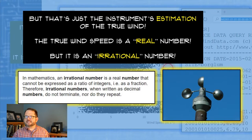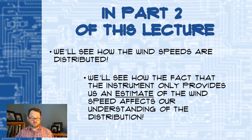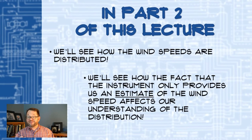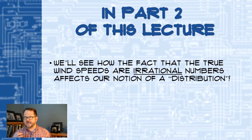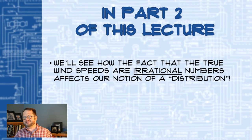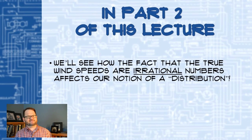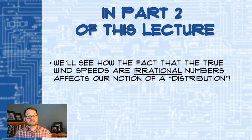This is pretty theoretical stuff, but it will give us insights into what we're doing in part two of this lecture. In part two, we're going to see how wind speeds are distributed — how often we get wind speeds of a particular speed, how often the wind is stronger than a given threshold, how often it falls in a certain range. We'll see that the instrument only providing rational-number estimates of wind speed affects our understanding of that distribution. More deeply, the fact that the true wind speed is an irrational number changes our whole idea of what we mean by a distribution of wind speeds — what are the chances the wind is a particular speed when we can't even know the exact speed with a finite number of digits?